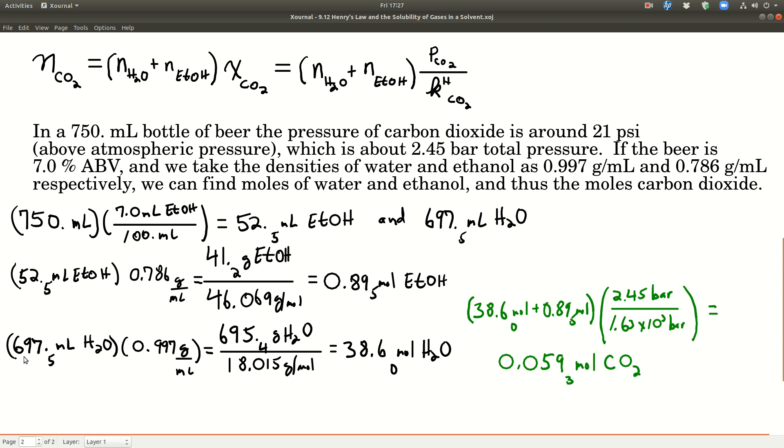Doing the same thing with water, so we have about 698 or so milliliters of water times the density of water at about 298 Kelvin, 25 Celsius. We get this many grams of water divided by the molar mass of water, this many moles of water, which we need for right here.